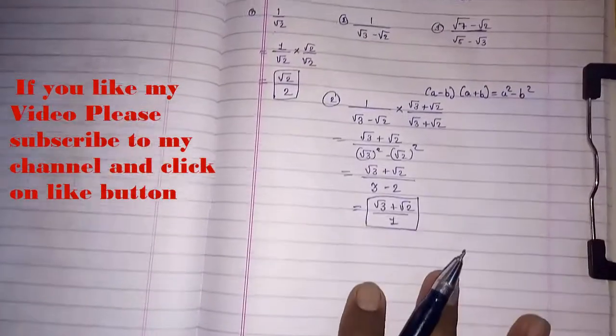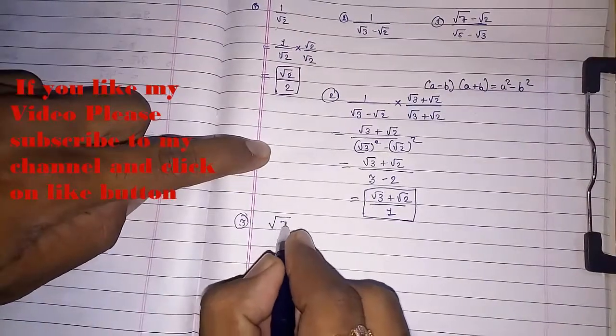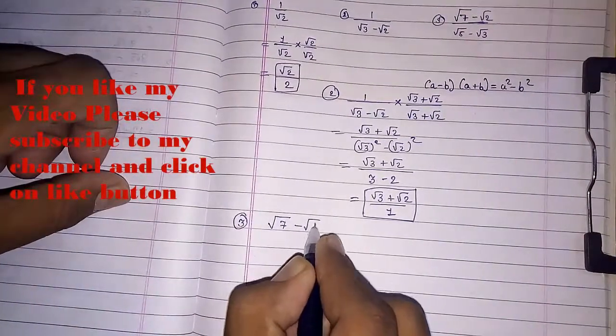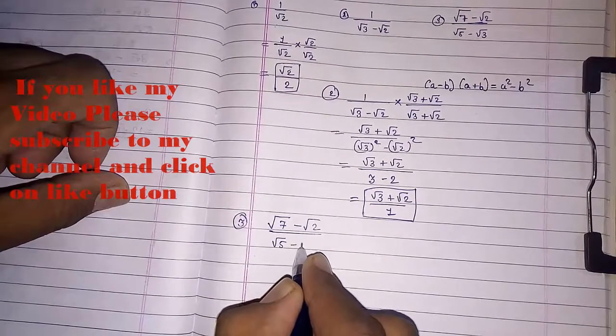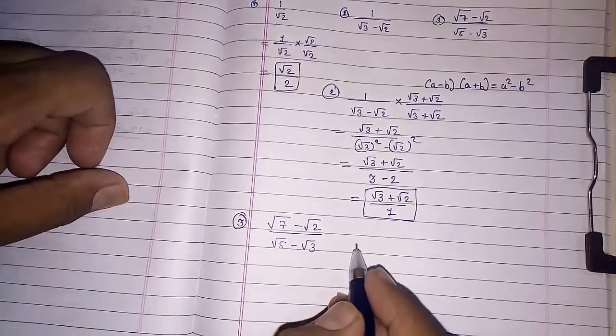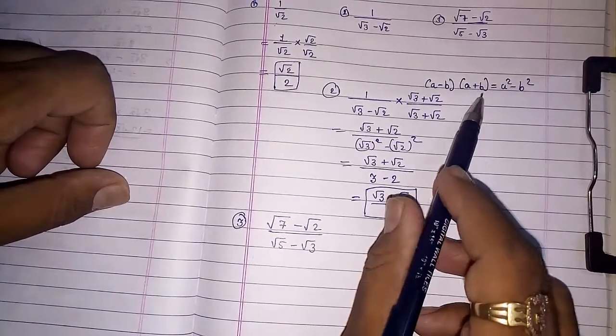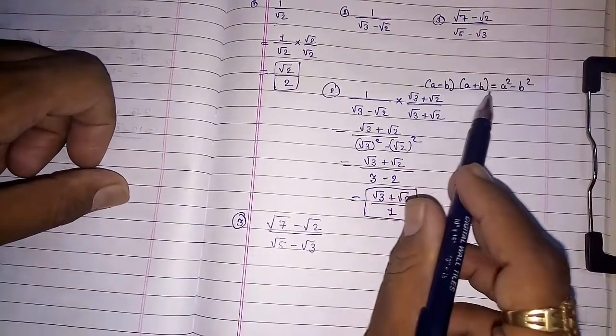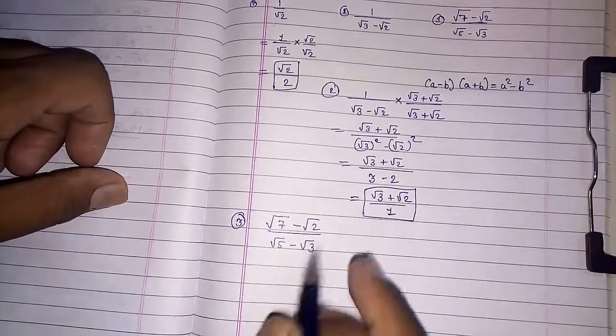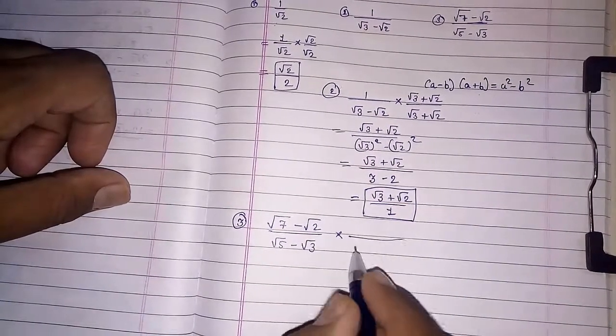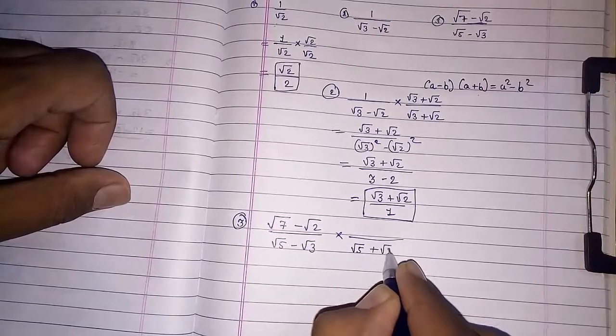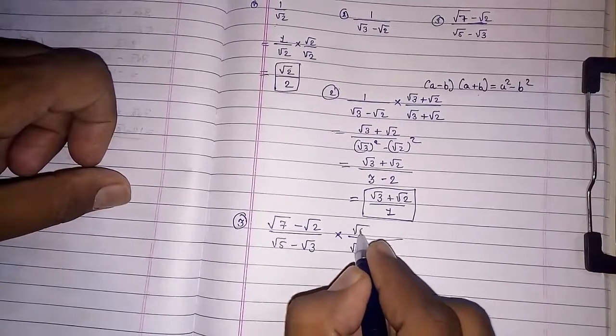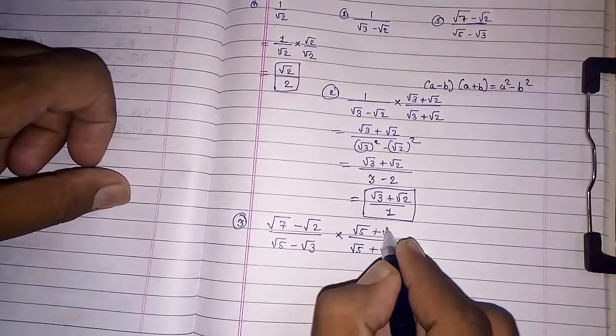Now, I am going to solve the third. Root seven minus root two upon root five minus root three. The same pattern which we followed here or which we had seen here. A minus B, A plus B, A square. In denominator, we have to multiply with root five plus root three.